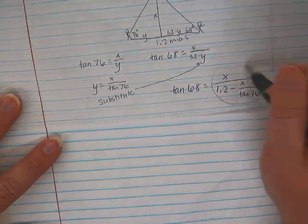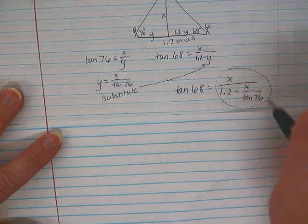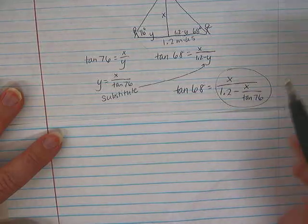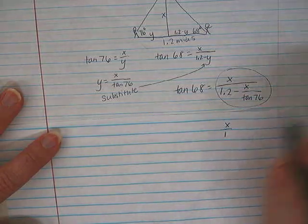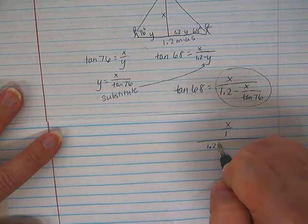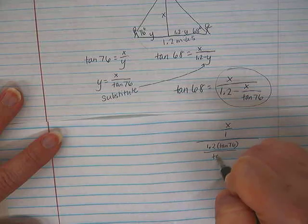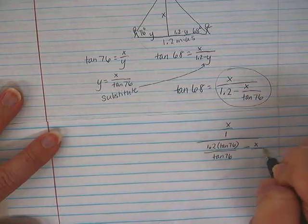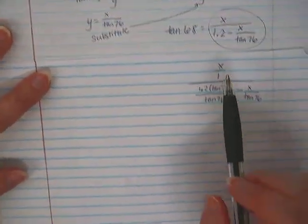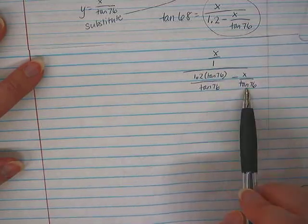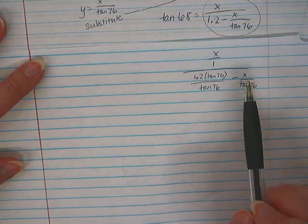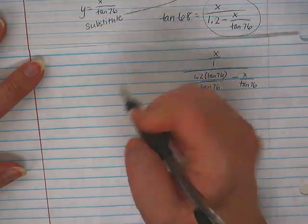And then, am I losing you? So I'm going to take this piece here and I'm going to change. I obviously have a fraction in the bottom, so I'm going to need to copy dot flip, so I'm going to turn the top into a fraction also. So let's turn the top into X over 1, and then the denominator I'm going to get a common denominator, so I have 1.2 times the tangent of 76 over the tangent of 76 minus X over the tangent of 76. So that's to get a common denominator right there, and then I can combine those together, correct? So that I'll have 1.2 tangent 76 minus X, right?